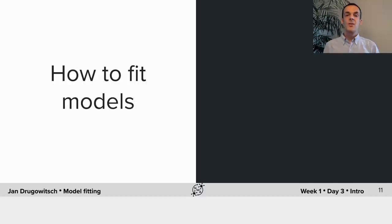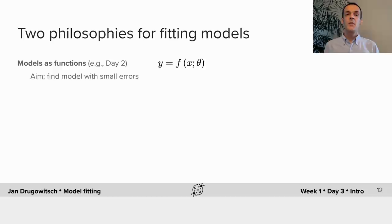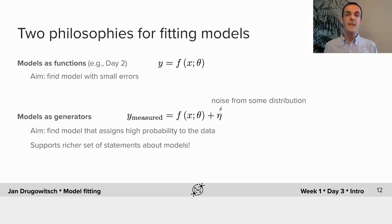Welcome back to part two of the introduction to day three. In this part we will ask how to fit models — that is, how to find the best fitting parameters. In general there are two philosophies for fitting models. The first is to interpret the model as some function f with some parameters theta and find the model that has the smallest error. The second philosophy is to interpret them as generators of our data, assuming that data is described by some function f plus some noise drawn from some distribution. Such a model fully specifies the process by which the data is made, and we want to find the model that assigns the highest probability to some observed data set.